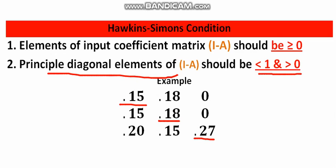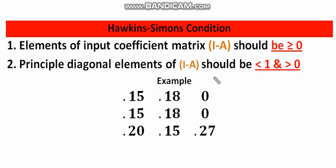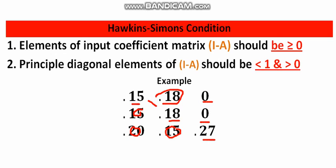Basically, the Hawkins-Simons condition requires that all elements of the input coefficient matrix be greater than or equal to zero — they may also be zero — but the diagonal elements cannot be zero; they must be less than 1 and greater than 0. The other off-diagonal elements may also be zero, which is why some entries are set to zero here for your understanding.